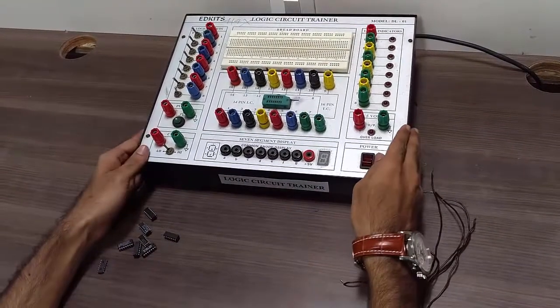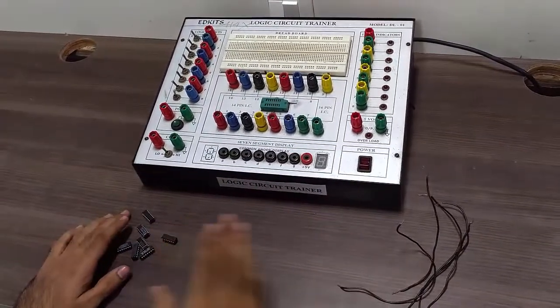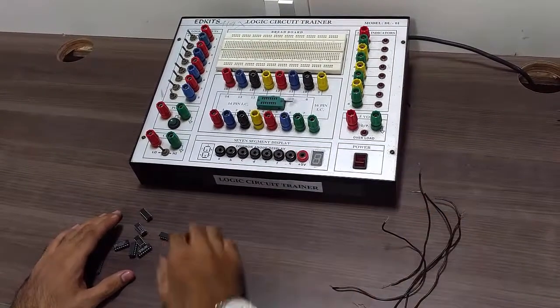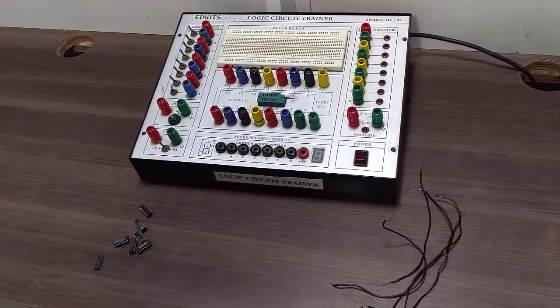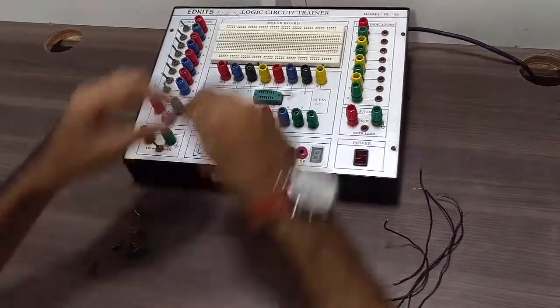For this experiment we need a logic circuit trainer, a few basic gate ICs, and a few connecting wires. Now let's take IC number 7408, that is the AND gate, and insert it over here.